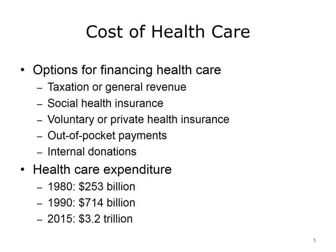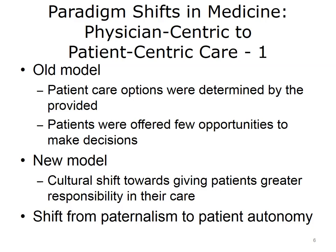Healthcare expenditure has increased dramatically in the last few decades. In the United States, healthcare expenditure was $253 billion in 1980 and increased to $714 billion in 1990. By 2015, it increased to $3.2 trillion, which was nearly 18% of gross domestic product, or GDP, and $10,125 per capita. There is definitely a need for cost containment, and this has been one of the driving forces and core values in U.S. healthcare today.